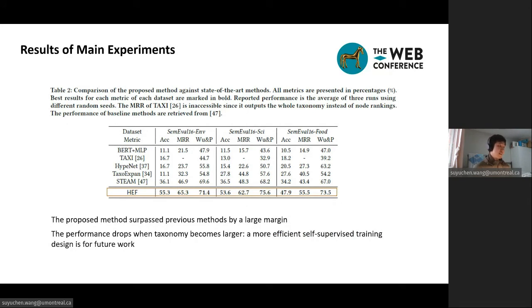Here we show our results of main experiments. From the results, we can see that our proposed methods surpassed previous methods by a large margin, thanks to a lot of different kinds of improvements. But we can also see that the performance drops when taxonomy becomes larger. So in the future work, we need a more efficient self-supervised training design.